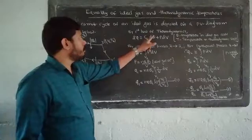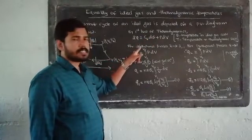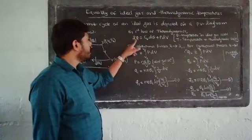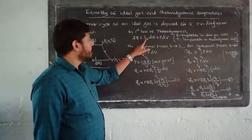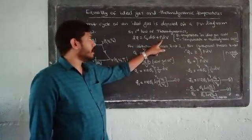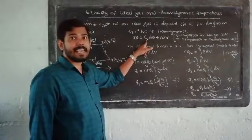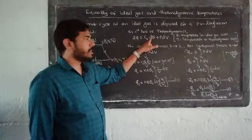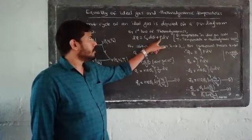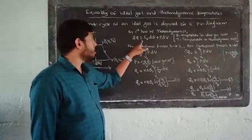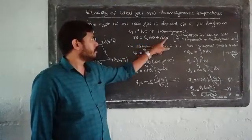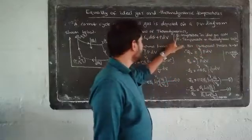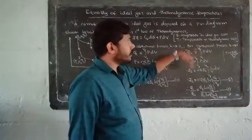Now we will consider the first law of thermodynamics applied to the ideal gas scale. The first law is D-bar Q equals dU plus dW. We can write CV d-theta plus P dV. Here theta is the temperature of the ideal gas scale and T is the temperature of thermodynamics.